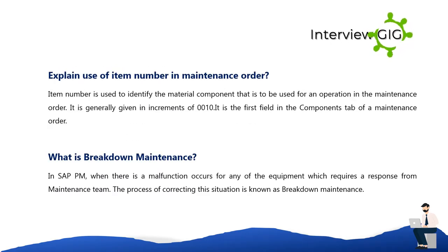An item number is used to identify the material component that is to be used for an operation in the maintenance order. It is generally given in increments of 0010 and is the first field in the components tab of a maintenance order.